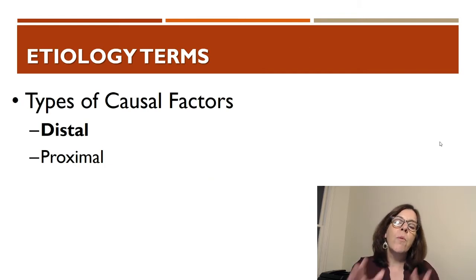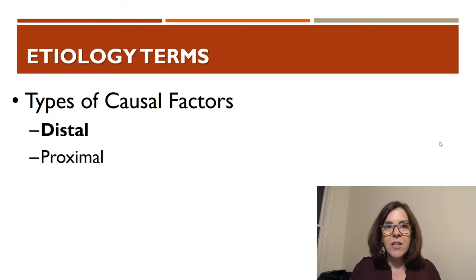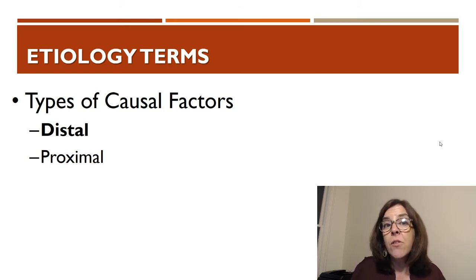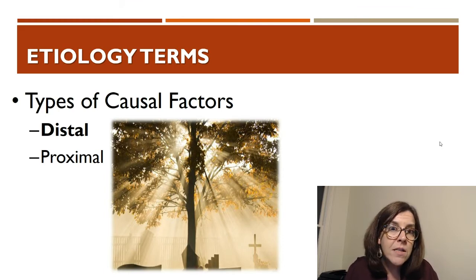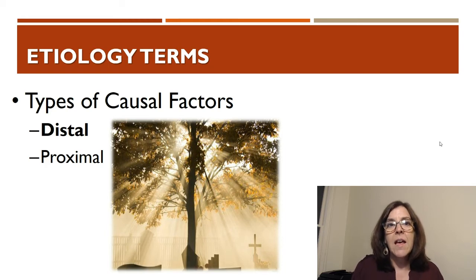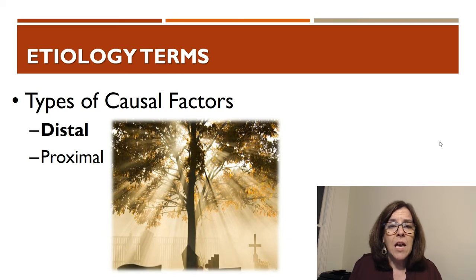When we talk about distal and proximal, think about time in relation to the onset of the disorder. Distal factors are something that has happened in the past — way in the past, not just recently. If you think about an adult developing depression, we might consider childhood factors as distal factors. For example, if a parent dies during your childhood, you are statistically at increased risk for developing major depressive disorder — that's a distal cause. Other distal causes include child maltreatment, adverse life experiences like poverty, or having a mentally ill parent.